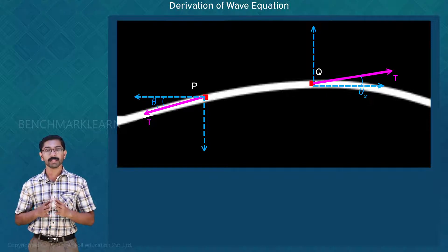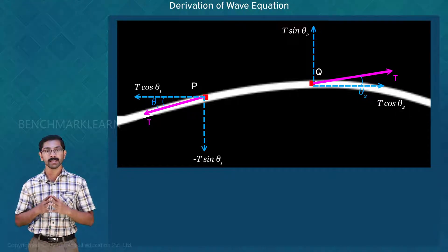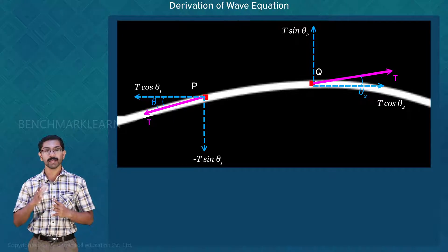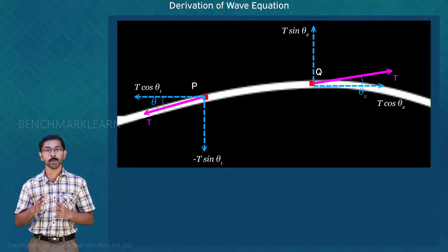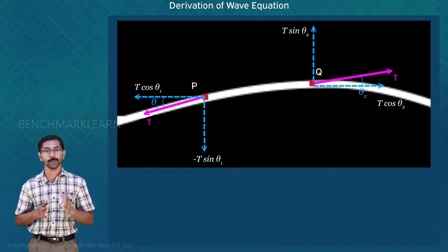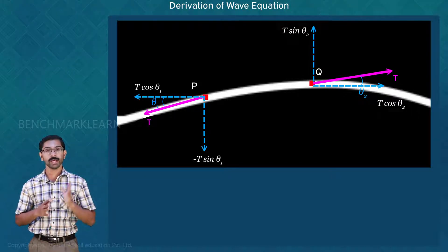The tension at point P has a horizontal component and a vertical component, and this force makes an angle θ1 with the horizontal axis. Since the direction of the tension is downwards at P, the vertical component of tension at this point is −T sin θ1. Similarly, the vertical component of tension at point Q is in the upward direction, so the vertical component at Q is T sin θ2. Let Fu be the net force in the direction of u. Then the net force is Fu = T sin θ2 − T sin θ1.